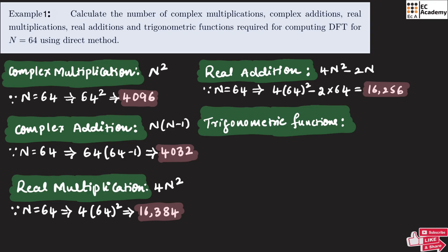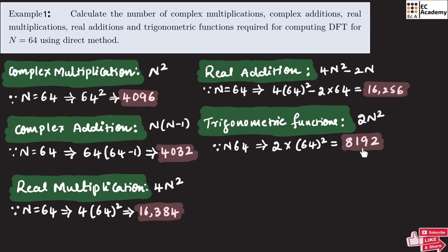Now to find the trigonometric functions, we use the formula 2n². Since n equals 64, we get 2 × 64² = 8192. So the number of trigonometric functions needed for the 64-point DFT is 8192. From this problem, we understand that as the number of points increases, the number of complex computations also increases. That is why the best approach is to use the fast Fourier transform, which reduces the number of computations needed to calculate the DFT.